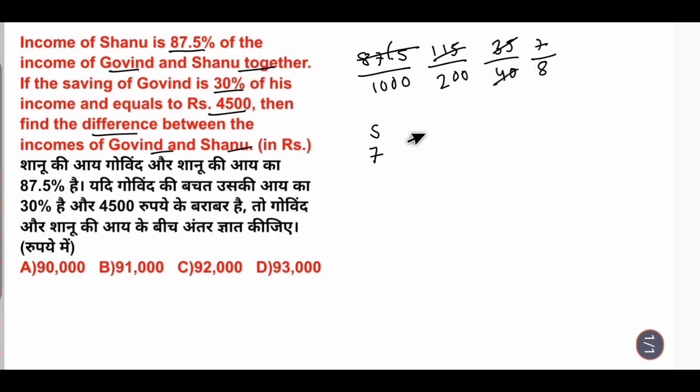Shanu and Govind together - let's write a variable. So Shanu is 7X.